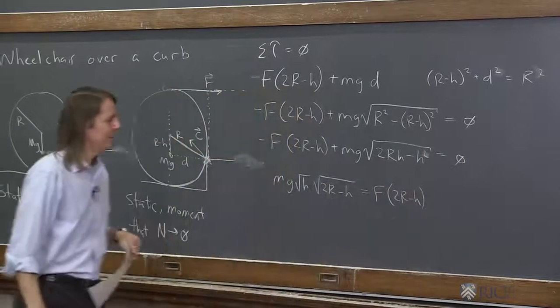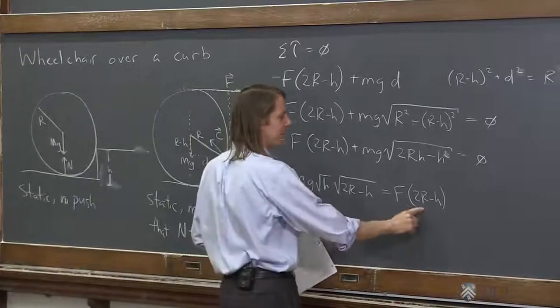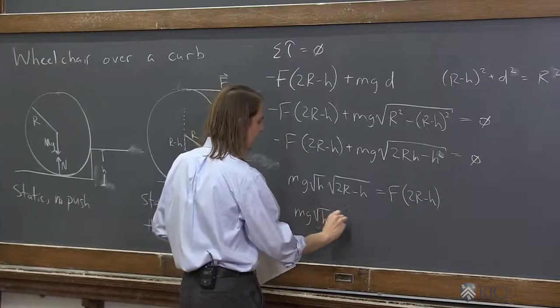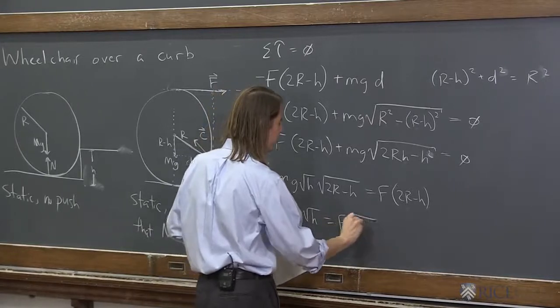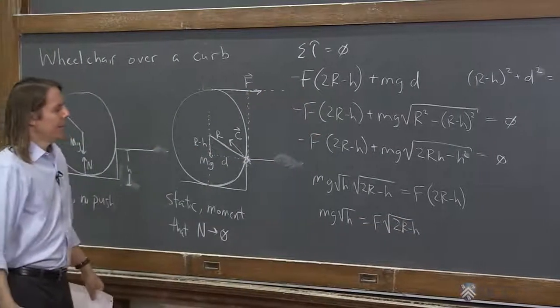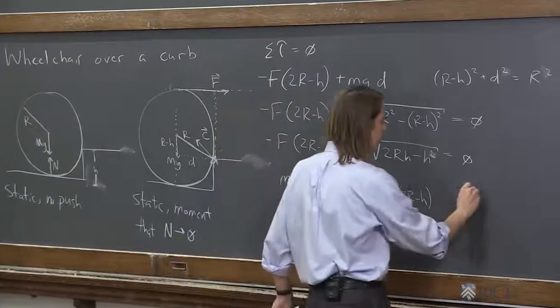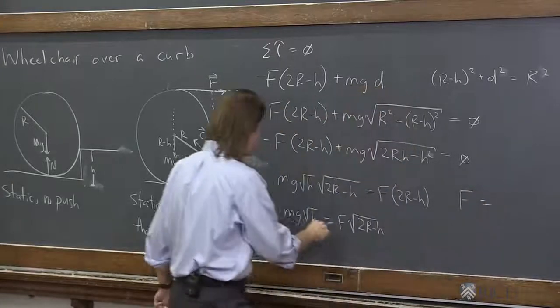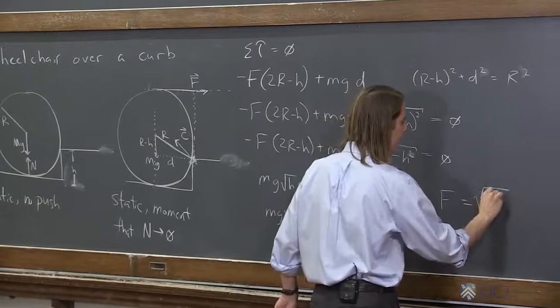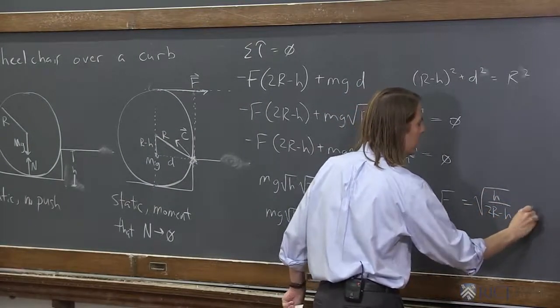Now you can see why I'm doing that. I want to get 2R minus h all by its lonesome self there. So then I can take this and put it under there, and that becomes a square root. So I get mg over F times the square root of 2R minus h. And eventually I've got to solve for the force, so we have to stop having fun here and talk about the answer. So F, the force you have to apply, is what? It's this factor, the square root of h over 2R minus h times mg.